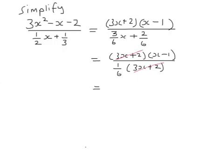So this simplifies to x minus 1 divided by a sixth. Now dividing by a sixth is the same as multiplying by 6. Remember you turn the denominator upside down and multiply. So dividing by a sixth means the same as multiplying by 6. And that's that fraction simplified.